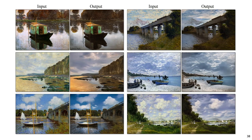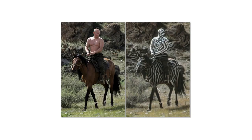The cycle GAN works surprisingly well. Here's how it maps photographs to impressionist paintings and vice versa. It doesn't always work perfectly though, and there are some interesting failure cases.